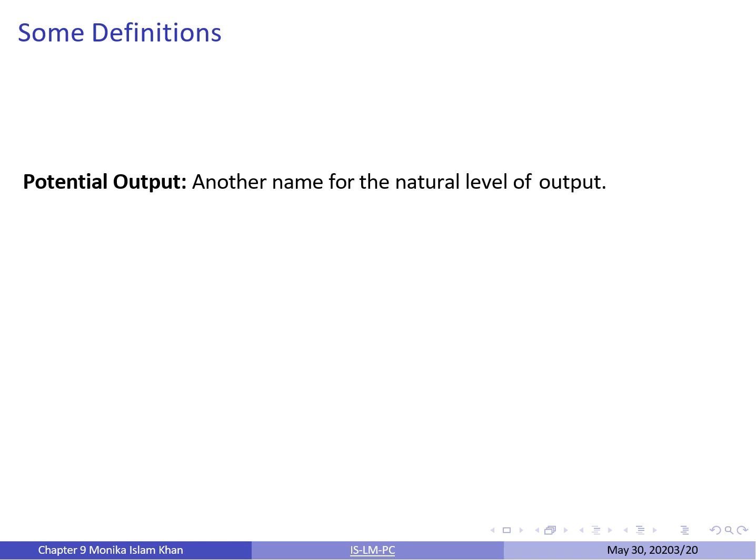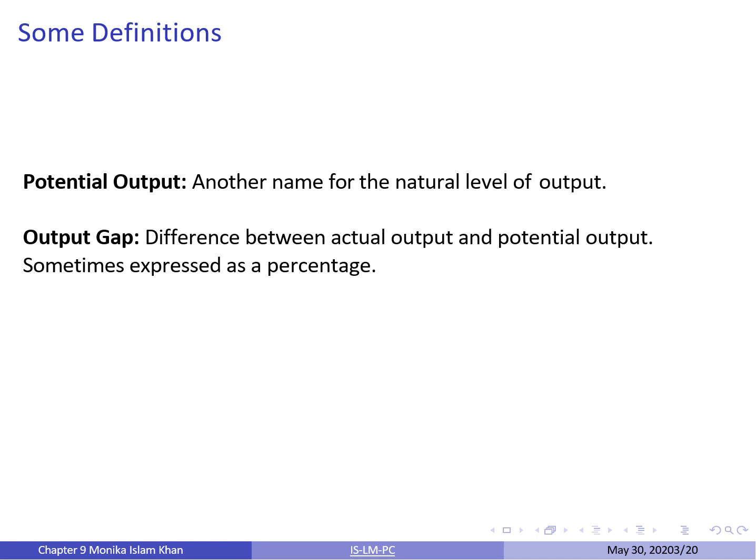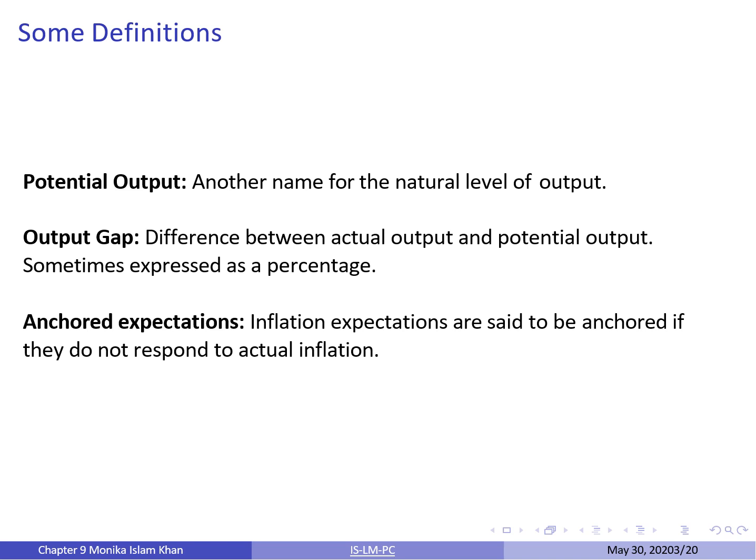Some definitions to remember before we begin. Potential output, which is another name for natural level of output. Output gap, which is the difference between actual output and potential output — sometimes also expressed as a percentage. And lastly, anchored expectations: your inflation expectations are said to be anchored if they do not respond to actual inflation in the economy.